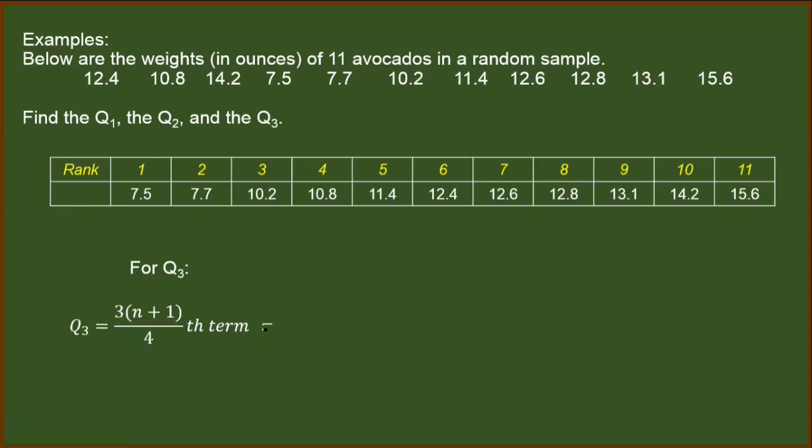So still, we have here N as 11 over 4. So we have here 11 plus 1, we have 12 over 4. 3 times 12, we have 36 over 4. 36 divided by 4, we have 9.